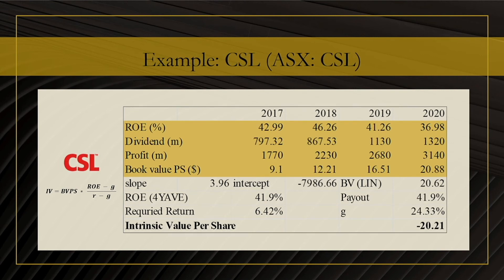The next company is CSL, and here we have an estimate of about minus 20. That is definitely not correct and there is something wrong. Looking at the numbers, we see that the problem is G — it's very, very large, and that means R minus G becomes negative, and the entire result becomes negative as well. In this case, where G is very large, the price-to-book value return on equity model does not work. We want G to be below R — that is something to keep in mind.